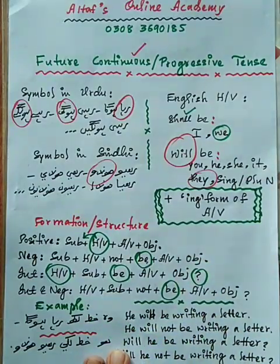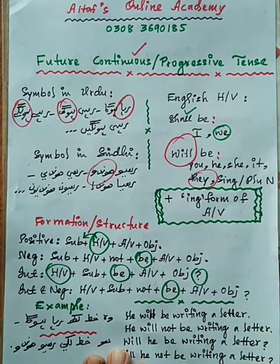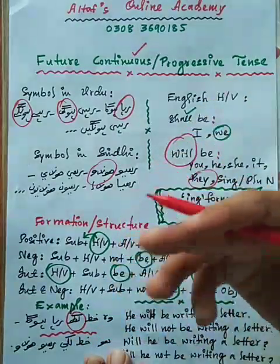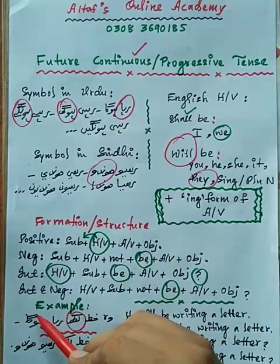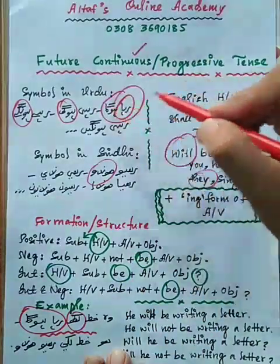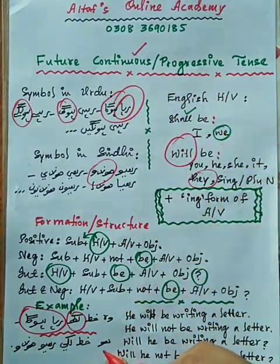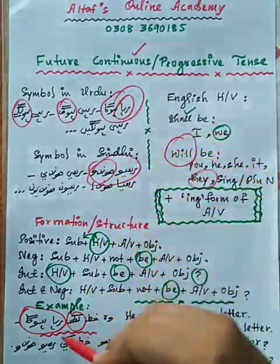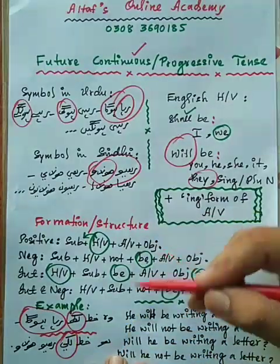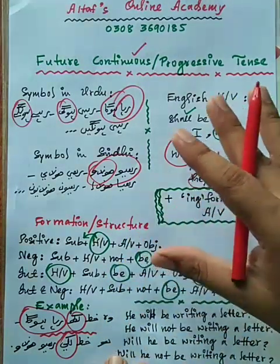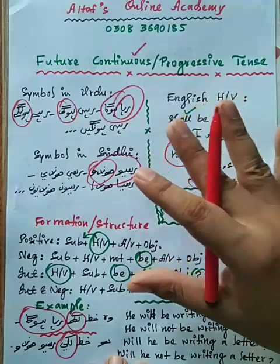Ab iska misaal lete hain. Example hai: 'Vo khat likh raha hoga.' Sabse pehle dekhen — action verb hai, haan hai. 'Likh' likha hua hai, yani kaam chal raha hoga. Sindhi mein kahenge 'hukhat likhi rahyo huendo.' Raho hundo — match ho gaya. Action verb bhi hai 'likhi', yani likhna. Likhne ka kaam karta rahega future mein — so we are sure this sentence belongs to future continuous or progressive tense.